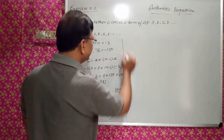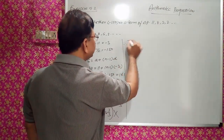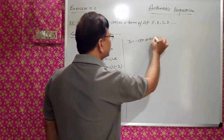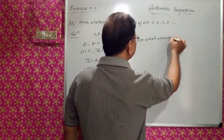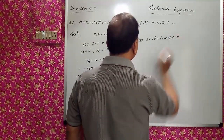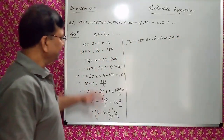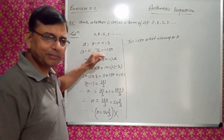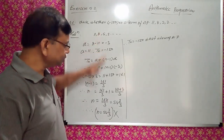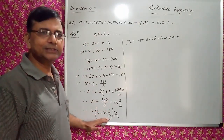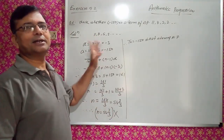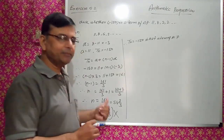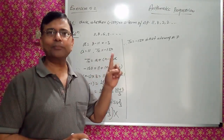Therefore TN = -150 is not a term of the given AP. We assumed -150 was the nth term and solved; since N did not come out as a whole number, by the method of contradiction, -150 cannot be a term of this AP.